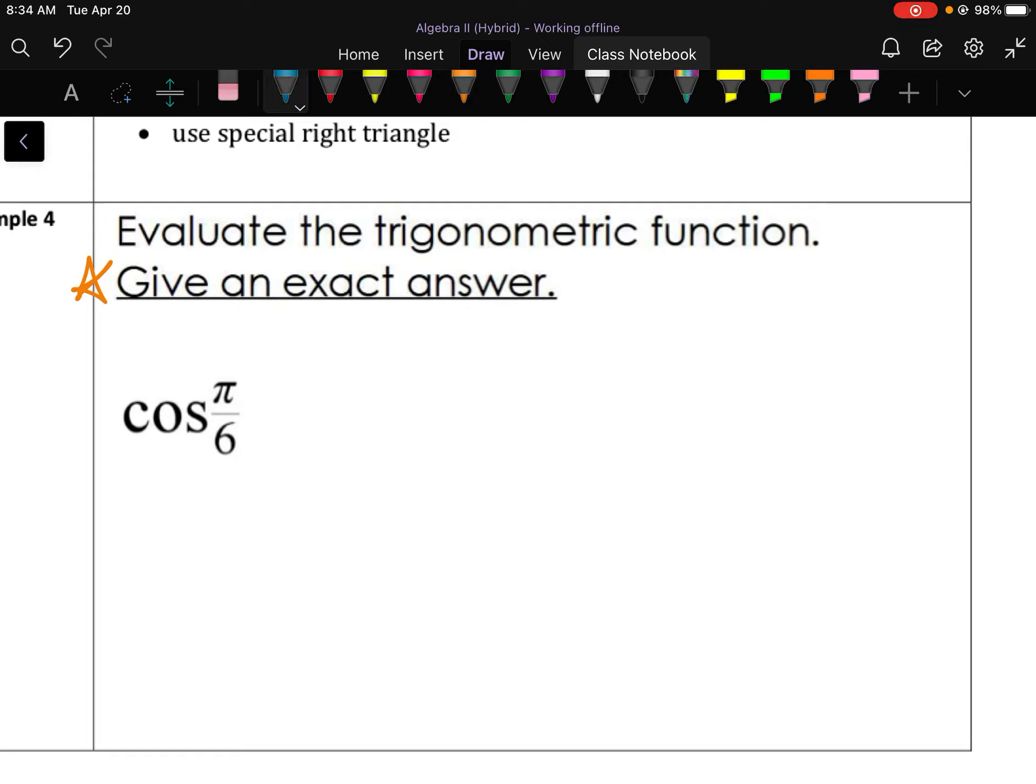So step number one, it says to convert radians to degrees. So let's take π over 6 times 180 over π this time, because I want my π's diagonal from each other because I want them to cancel out. And then if you want to simplify diagonally again, 180 and 6 are both divisible by 6. So we get 1 and we get 30. So π over 6 in degrees is 30 degrees. So we are actually evaluating cosine of 30 degrees.